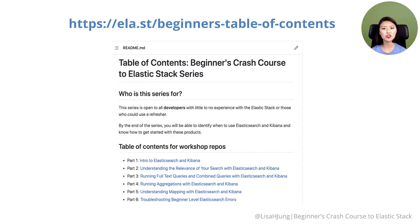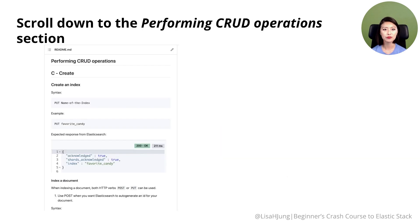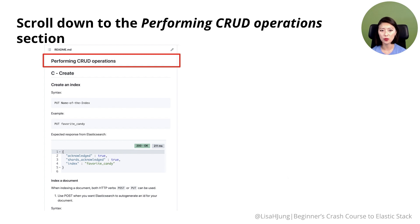Before we get started, I want you to save this link shown on the screen. This is a go-to link for all the resources I'll share with you this season. For this episode, I'll be referring to a GitHub repo to show you how you can perform CRUD operations in Elasticsearch. Go to the link on the screen — you can also access it in the description of the video. Once you're there, click on part one, then scroll down to the performing CRUD operations section.